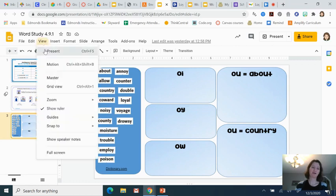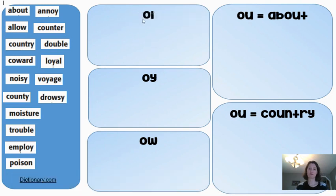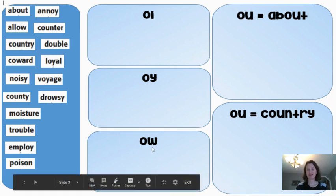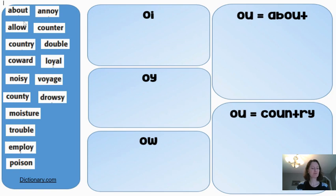For day one, we are looking at the spelling patterns to choose from. There can be OI for that OI sound like moisture, OY for that OI sound again like in voyage, and OW for the OW sound as in drowsy. That's going to be pretty easy to sort — just find the word with the matching spelling pattern. But when you get to a word that has OU, it could be the OU as in about or counter, or it could be the OU sound as in country or double. So you are going to have to listen to the word to figure out which sound it has, and dictionary.com can help you with that.